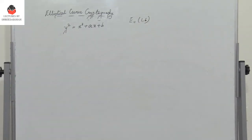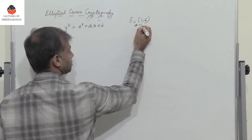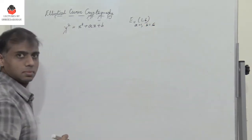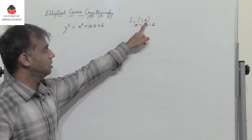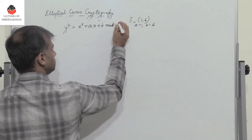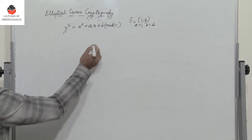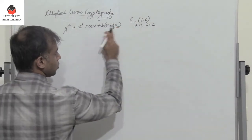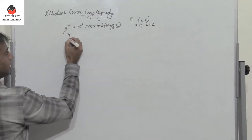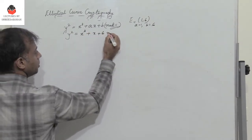E11(1, 6) basically means that I have an elliptic curve where the value of a is 1 and the value of b is 6. And 11 means that we are operating in mod 11. So here I have an elliptic curve defined over mod 11 with a=1 and b=6. I can rewrite the elliptic curve as y squared equals x cubed plus x plus 6, operating in mod 11.